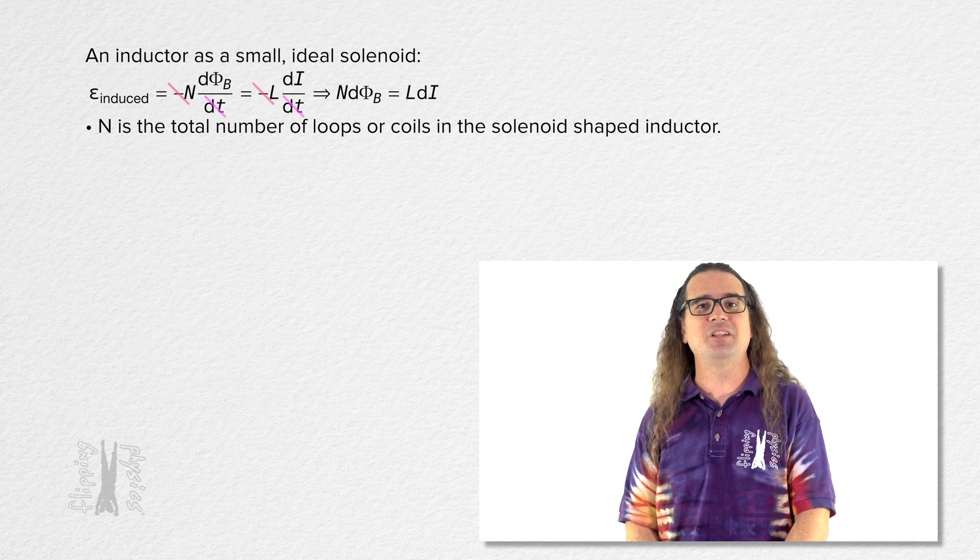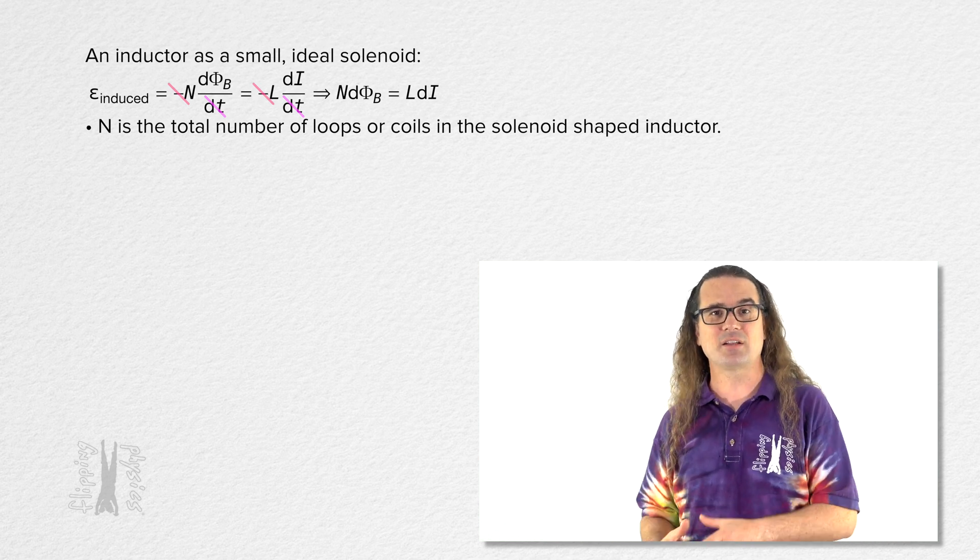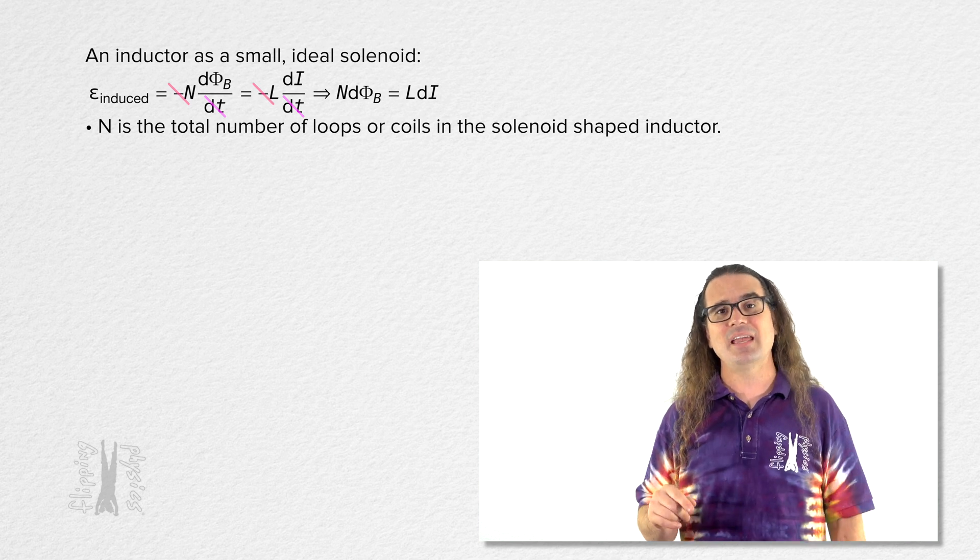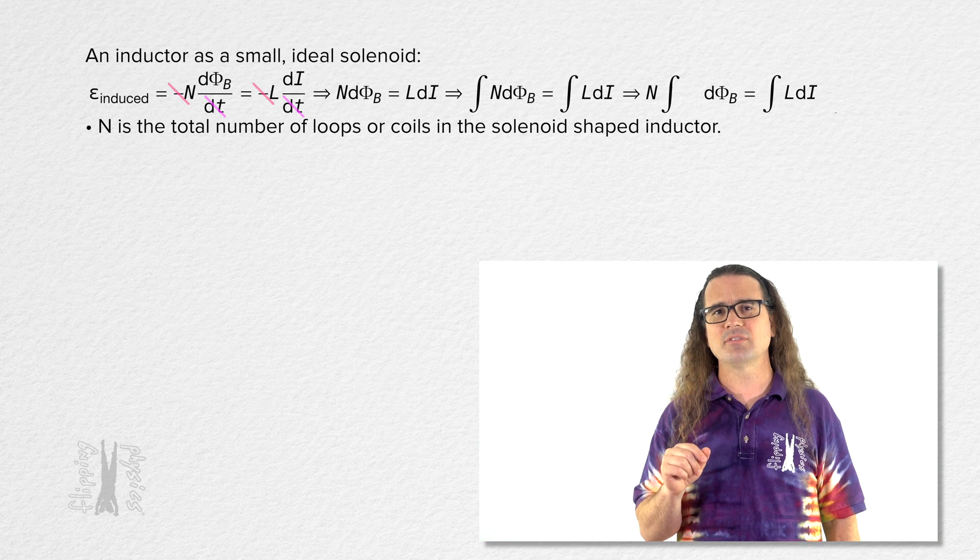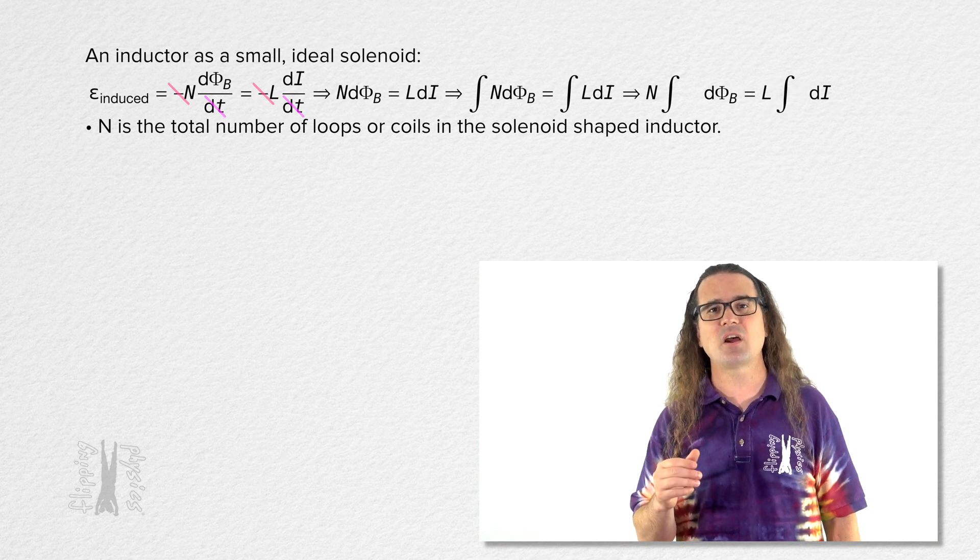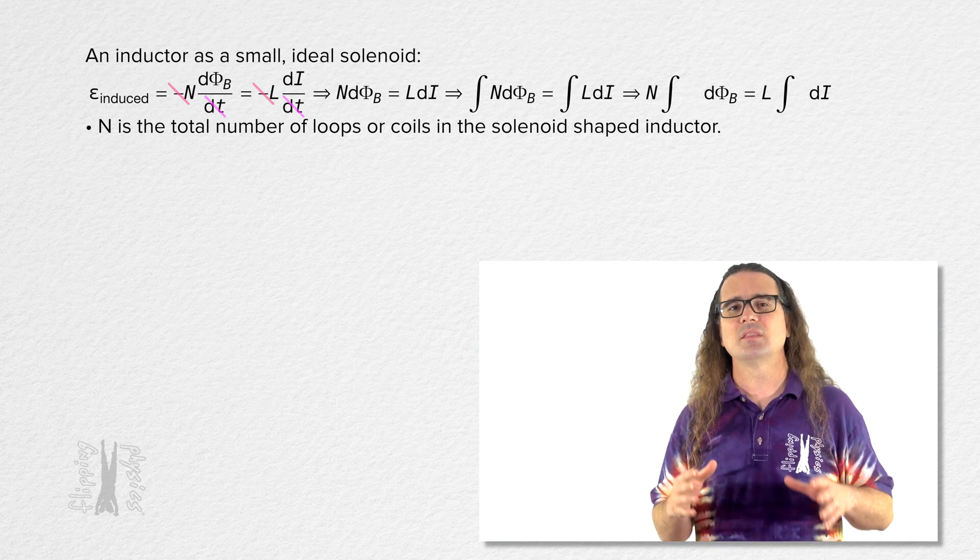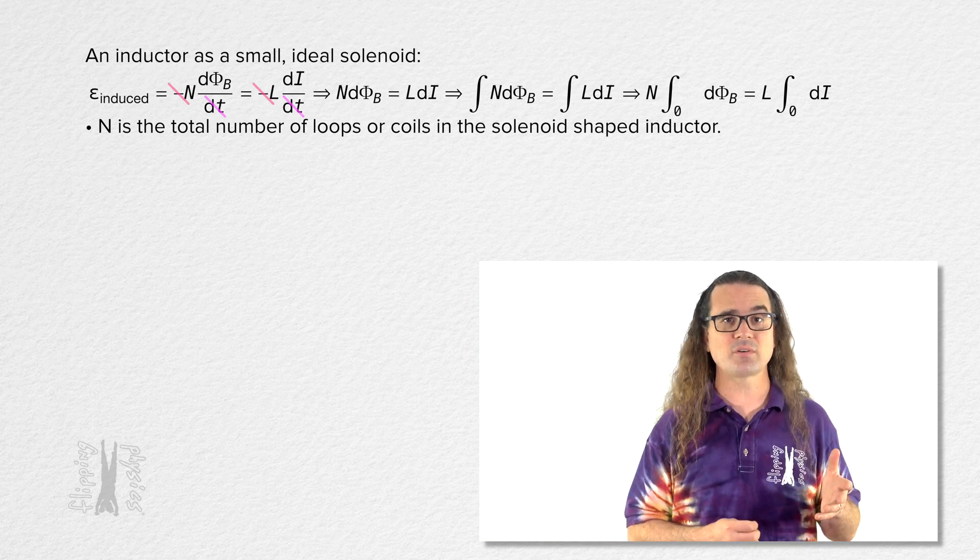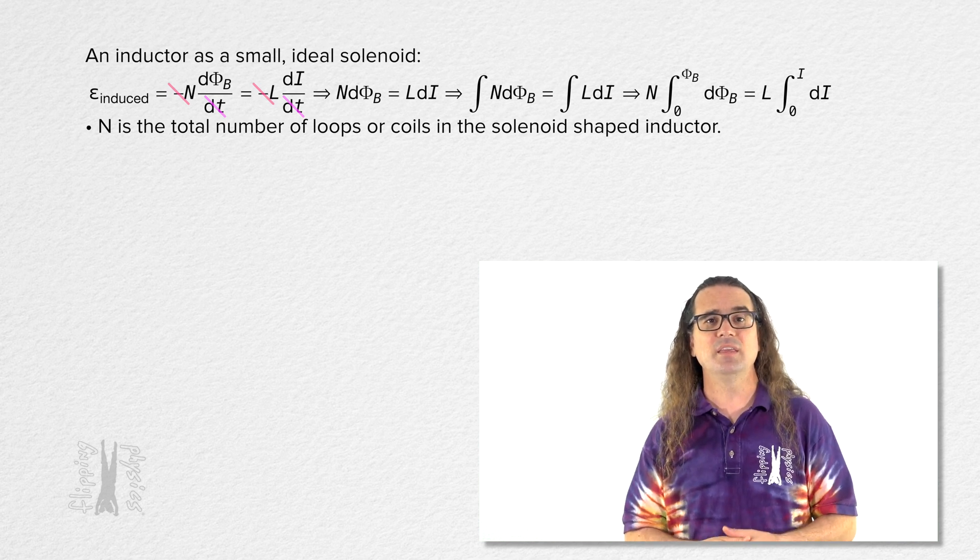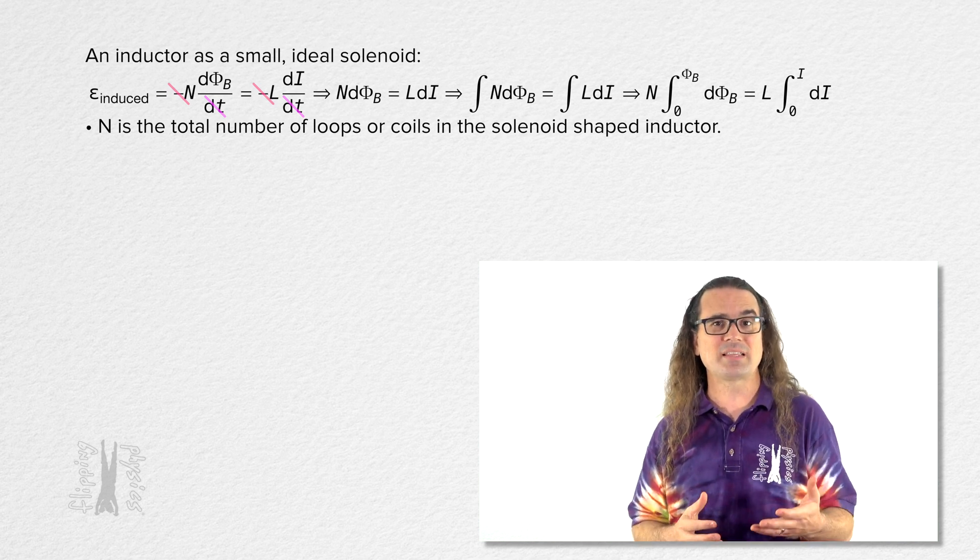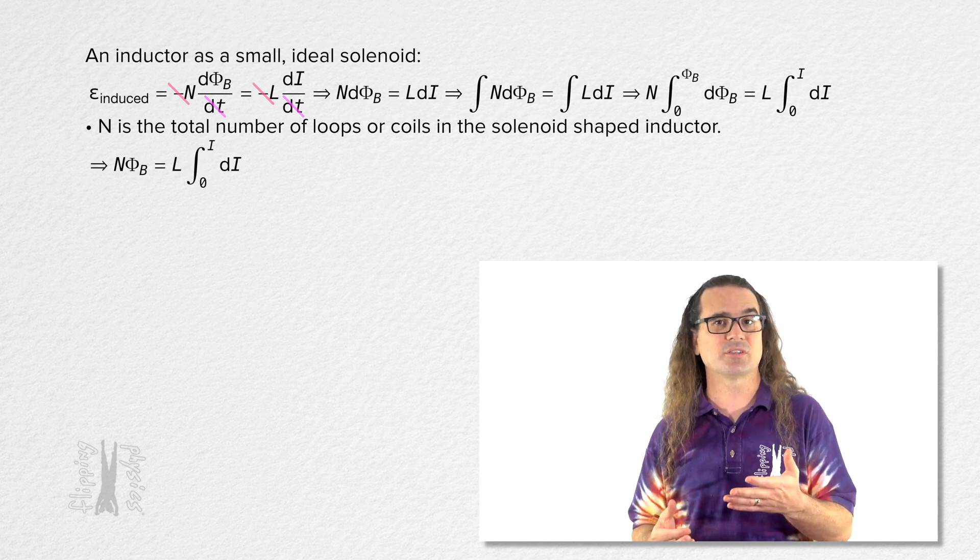Recall that capital N is the total number of loops or coils in the solenoid-shaped inductor. Now we can take the integral of both sides. Both the total number of loops and the inductance of the inductor are constants and can be taken out from their integrals. The limits of both of these are from zero to their final variables of magnetic flux and current. The integral of one with respect to magnetic flux is just magnetic flux and the integral of one with respect to current is just current.